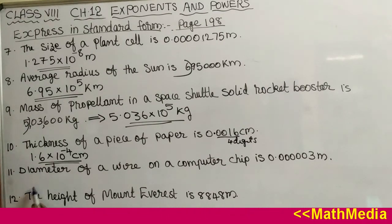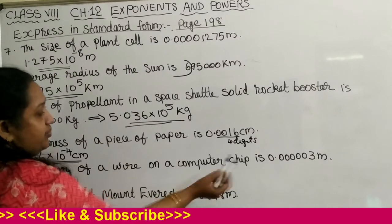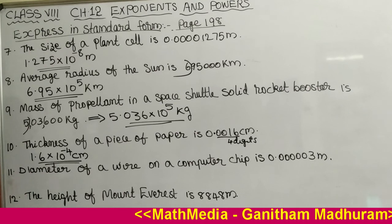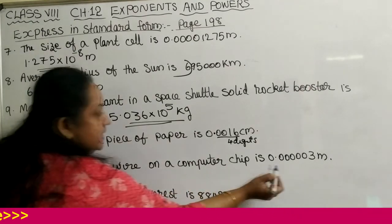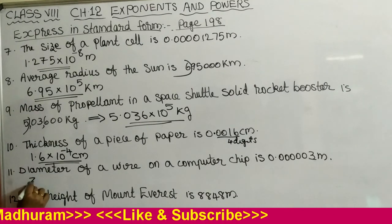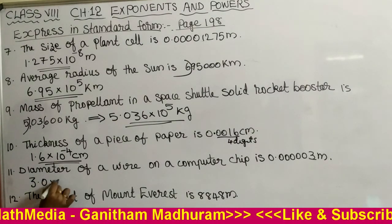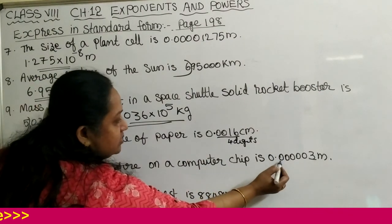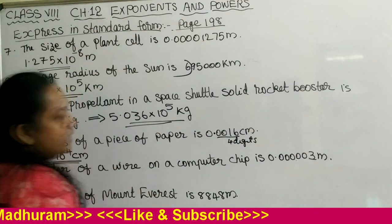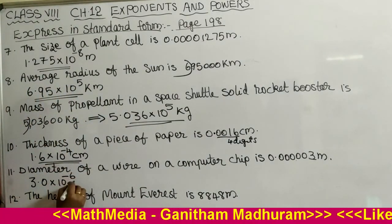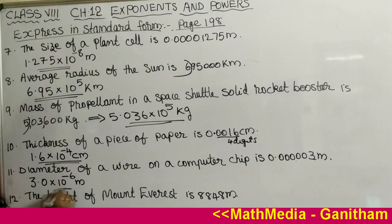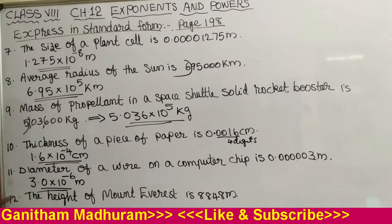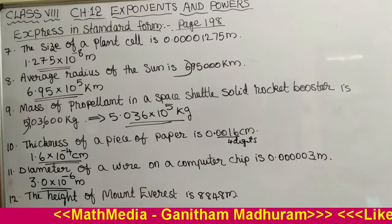Next question: the diameter of a wire on a computer chip is 0.000003 meters. It is a decimal number and the non-zero digit is 3. So we write 3.0 into 10 to the power minus, because it is a decimal number. After the decimal point there are 6 digits. So we write 3.0 into 10 raised to minus 6 meters. The diameter of a wire on a computer chip is 3.0 into 10 raised to minus 6 meters.